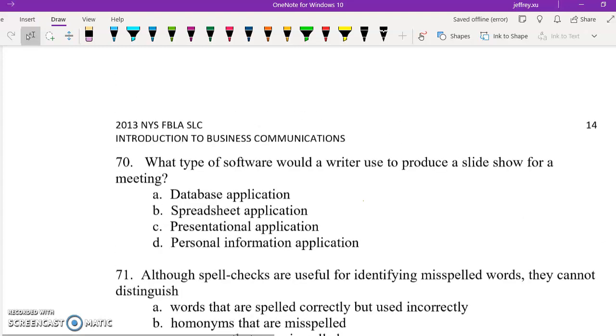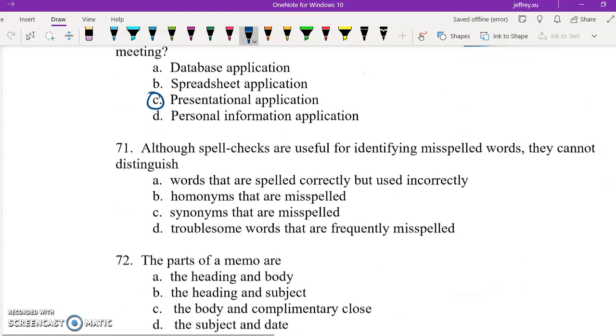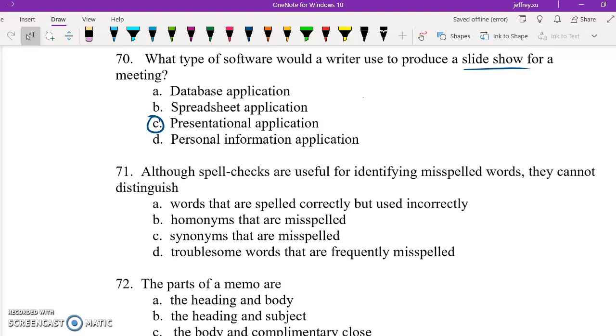Question 70, now we kind of move on to the nitty gritty of communications and not just like the grammar or punctuation concepts, but more of like how you communicate. What type of software would a writer use to produce a slideshow for a meeting? So if you use a slideshow, you're most likely presenting something to a large group of people. So presentation application aligns with that. Spell checks cannot distinguish what. So spell checks allow you to identify words that are misspelled, but they cannot determine whether you use the word correctly or incorrectly. So A is the correct answer.